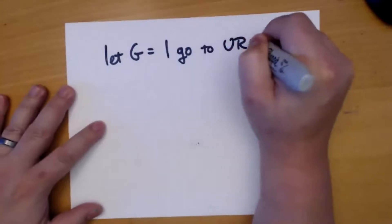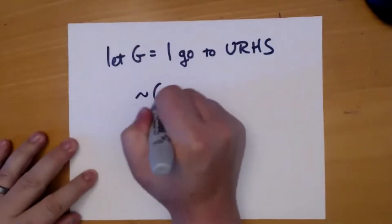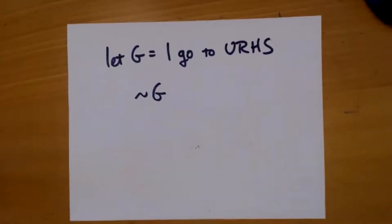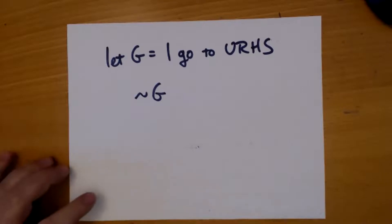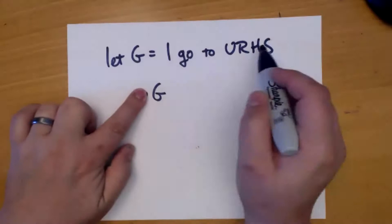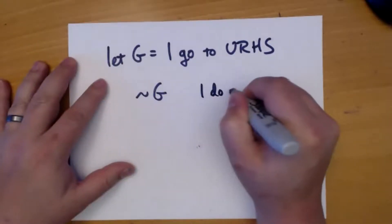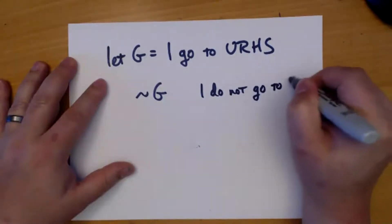Let's keep going. If this is the negation, you're making something negative. If the regular G is 'I go to Unity Reed High School,' then the negation symbol in front would mean 'I do not go to Unity Reed High School.'